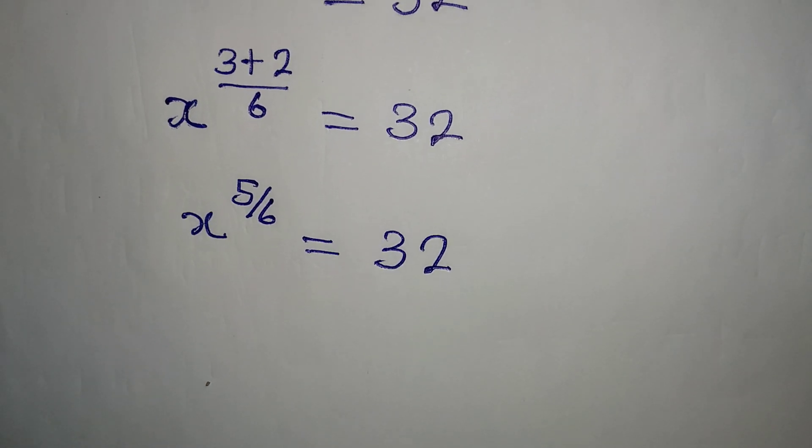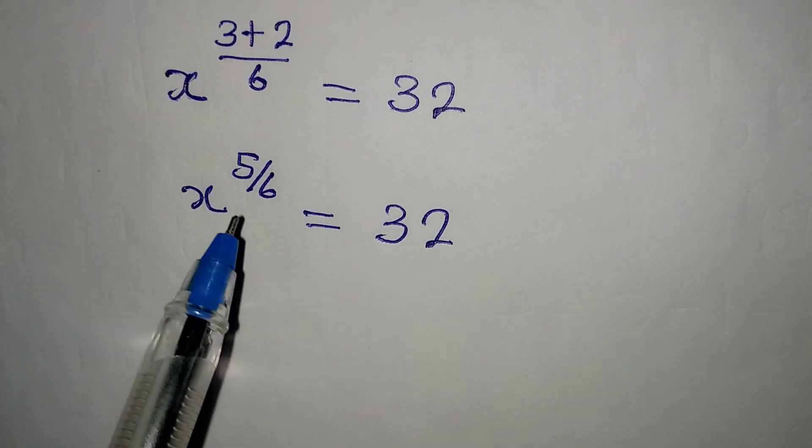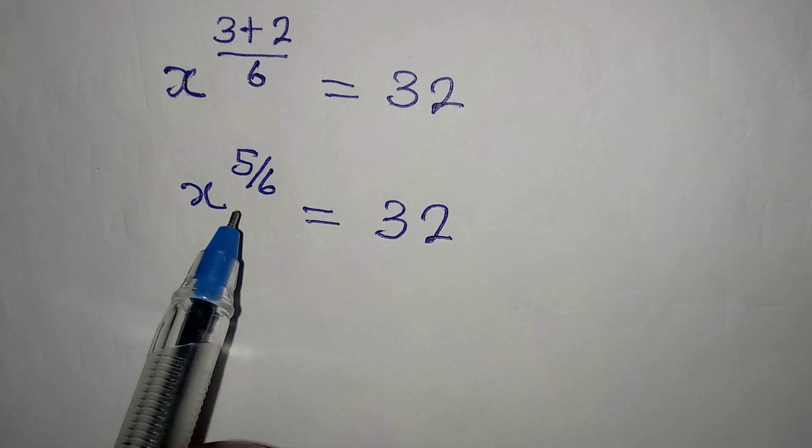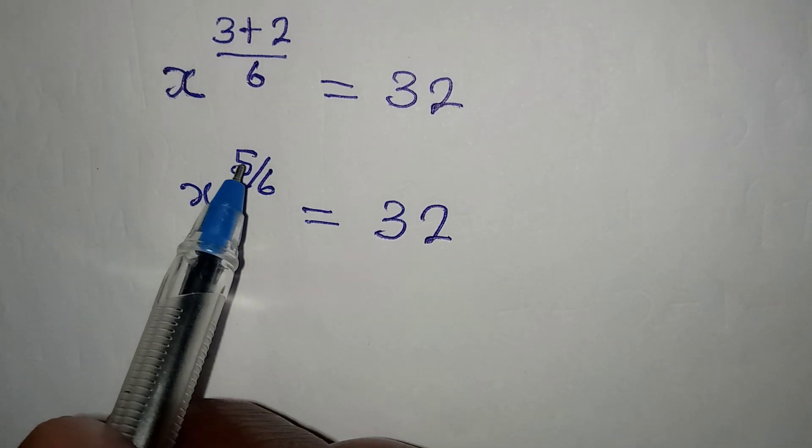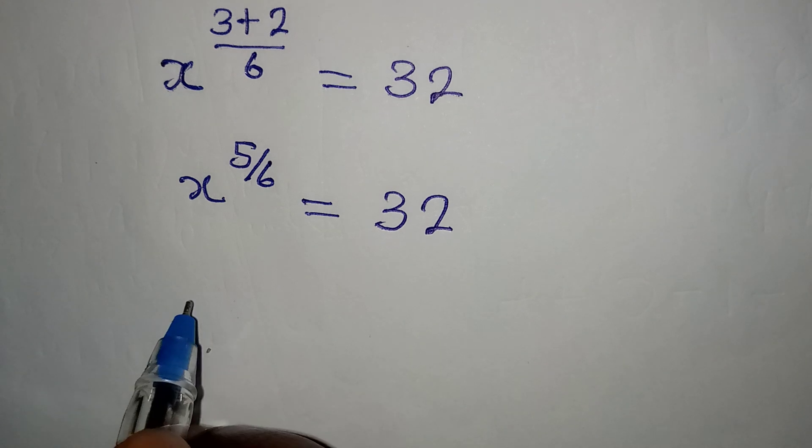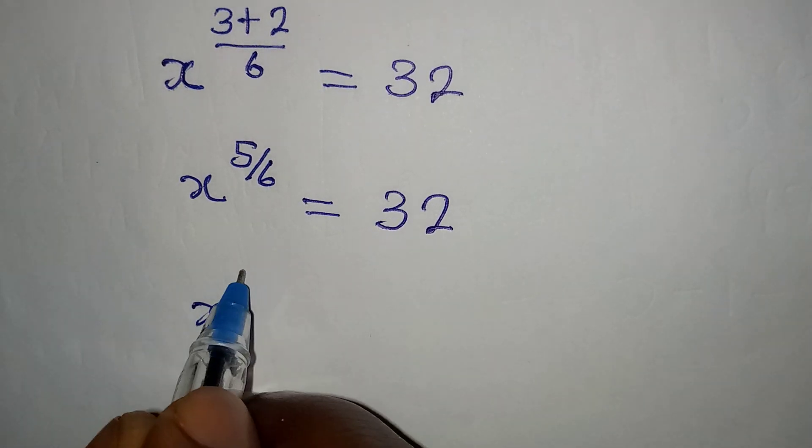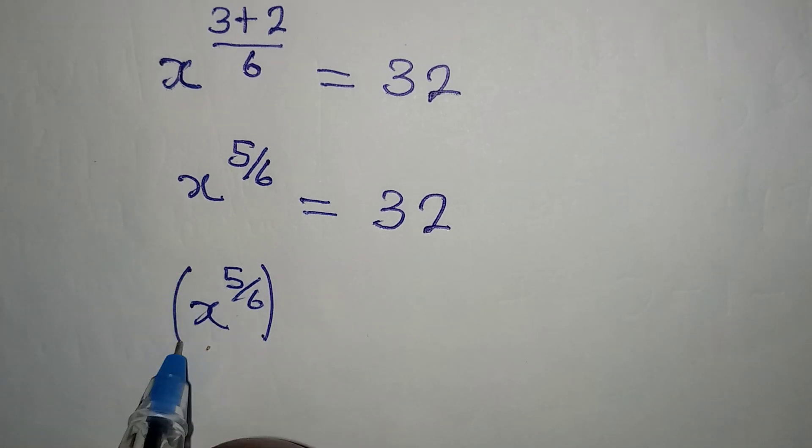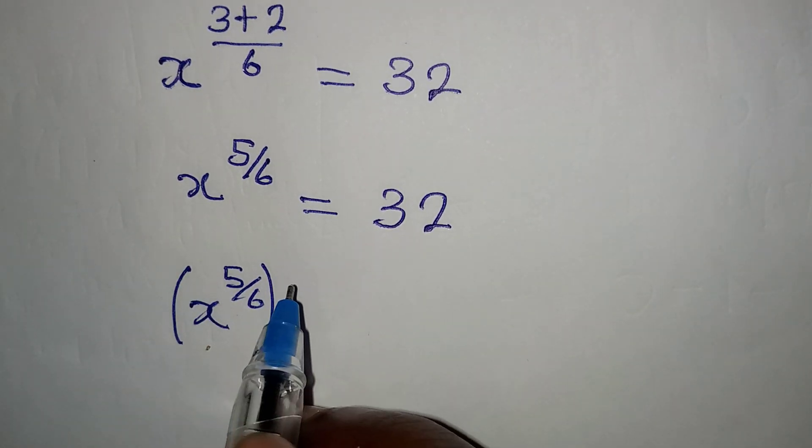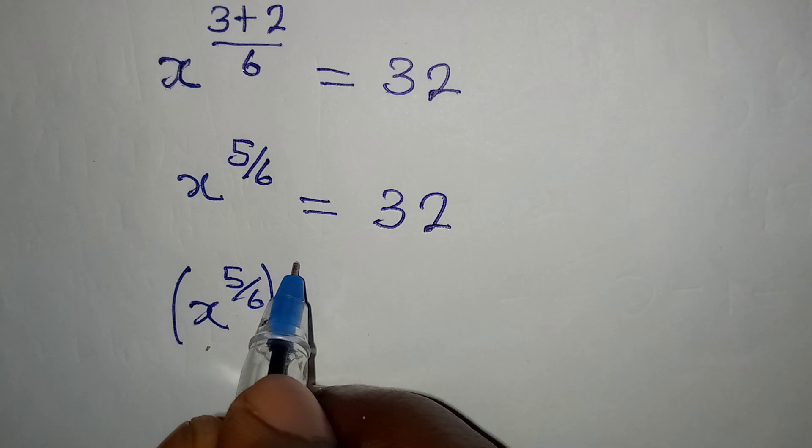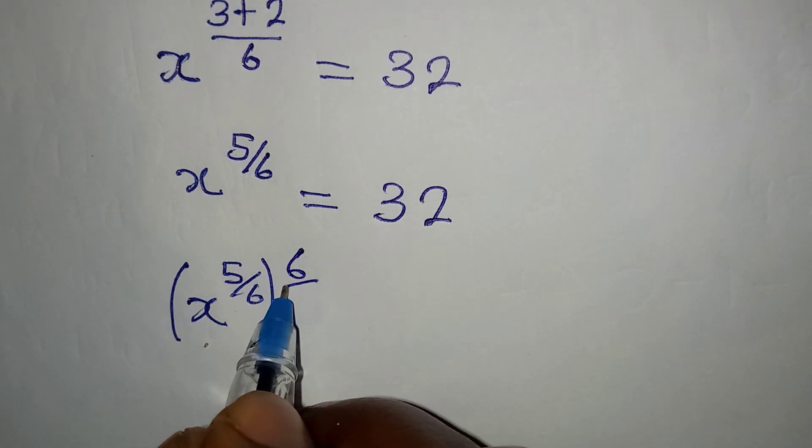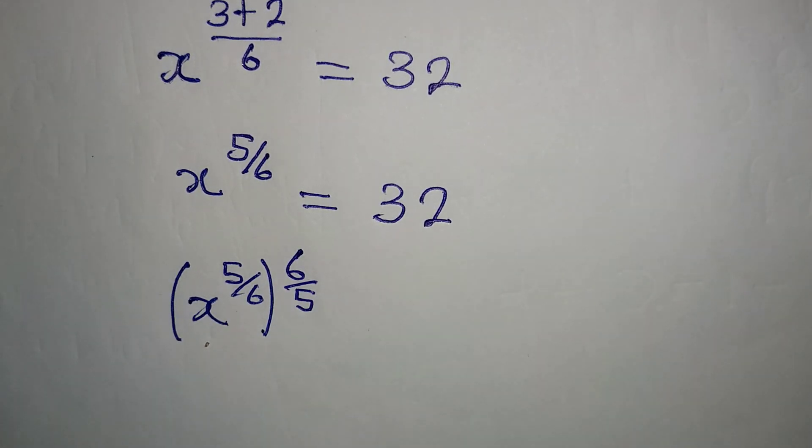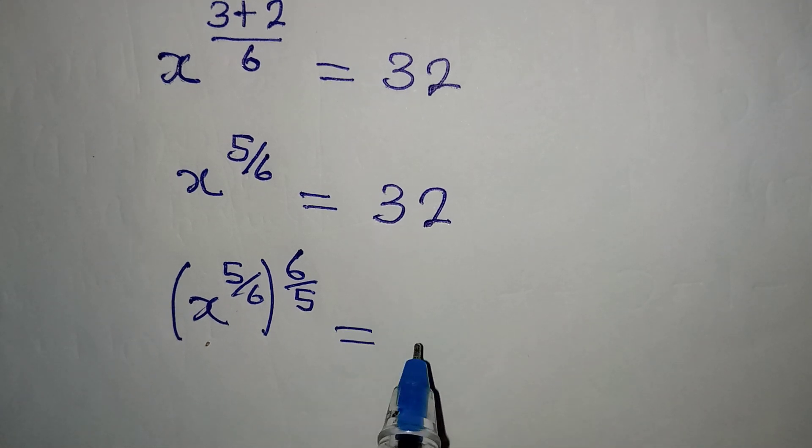Now the next thing I will do is to remove this power from here. And to do that, I will multiply the power by its reciprocal. So I am going to have x to the power of 5 over 6, then this will be multiplied by the power which is going to be outside and it will be 6 over 5. So this is equal to 32.